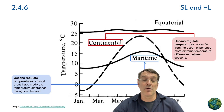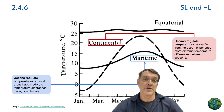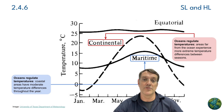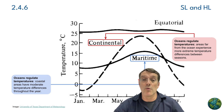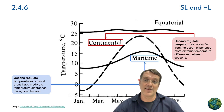Ocean currents have a profound effect on coastal climates. Maritime locations experience moderate temperature differences throughout the year — temperatures don't go as high or as low — but continental areas far from the oceans show more extreme seasonal variations, with cold winters and hot summers.